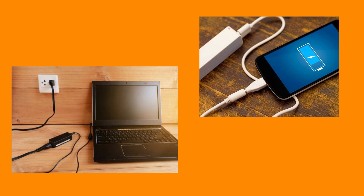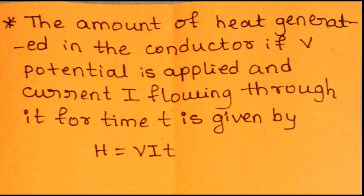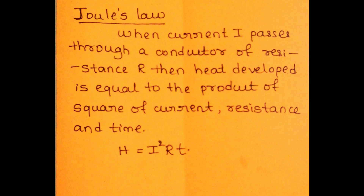Have you all observed mobile phones or laptops getting heated up while charging? Yes, it is getting heated up. Do you know how this heat gets generated? This is called the heating effect of electric current. If V is the potential applied and I is the current flowing through it for time T, then the amount of heat generated in the conductor is given by H equal to V into I into T. According to Joule's law of heating, when current I passes through a conductor of resistance R for time T, the heat developed equals the product of the square of the current, resistance, and time: H equal to I² R T.